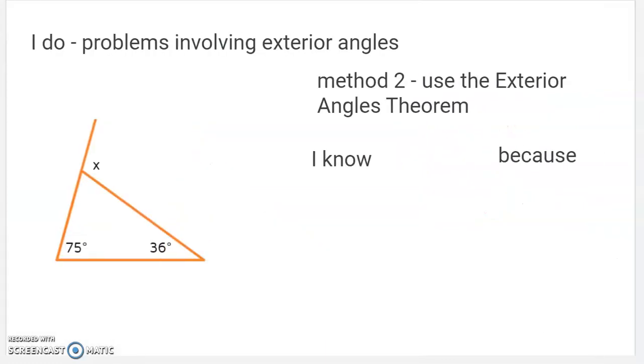So that means I'm still going. I could have just, if I knew that, you can also use this theorem to shortcut your way to X. So you can say, jump right to the answer. You can say, I know X equals 111 degrees because of the exterior angle theorem. This one says X is equal to 75 plus 36. It's the two angles away from it.